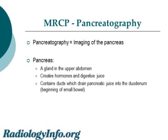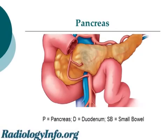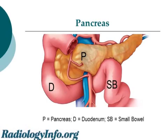MRCP is also a great way to look at the pancreas. The pancreas is a gland situated in the upper abdomen — it makes hormones and digestive juice. Inside the pancreas are ducts which carry the digestive juice into the duodenum, which is the beginning of the small bowel, where the pancreatic juice meets the food and is used for digestion. Here is a drawing of the inside of the upper abdomen, showing how the pancreas, colored in yellow, is nestled against the duodenum and the small bowel. On this image, you cannot see the small ducts inside the pancreas which connect it to the duodenum.